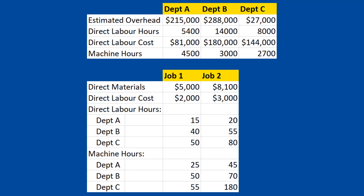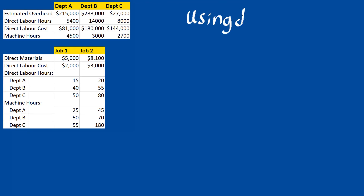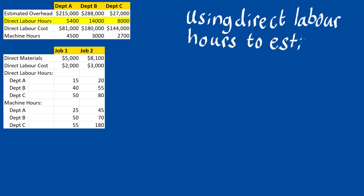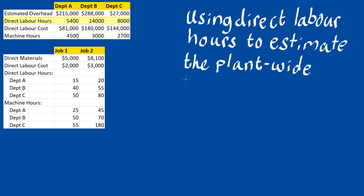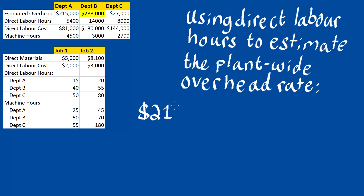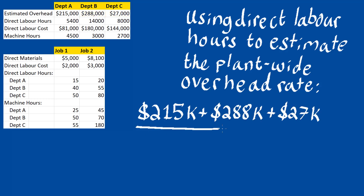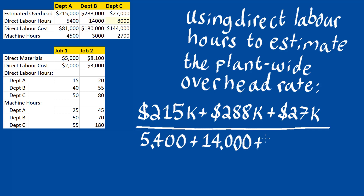Let's use these inputs to go over a more comprehensive example of applying predetermined overhead rates to job order costing. Using the combined direct labor hours of each of the departments, we can determine the plant-wide overhead rate, which is $215,000 plus $288,000 plus $27,000, divided by the sum of the direct labor hours — 5,400 plus 14,000 plus 8,000 — giving us a plant-wide overhead rate of $51.96.